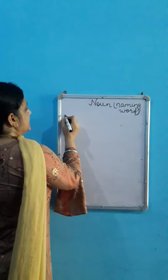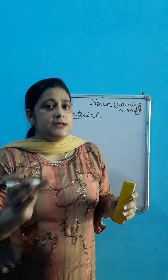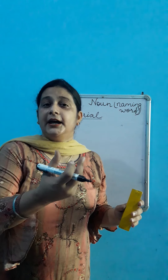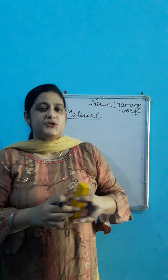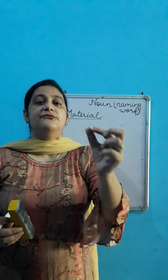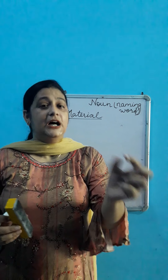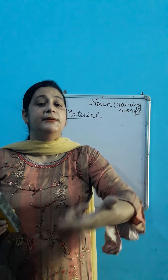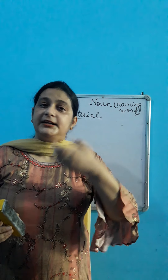Next comes material noun. A material noun is a name of a thing from which another thing is made. Matlab ek material ka naam, jis se koi cheez banti ho, us ko hum kya kehte hain? Material noun. Students aksar isme confused hote hain. Main aapko example deti hoon — jaise wood, rubber — yye kya hain? Hamari materials hain. Inse hum cheezein banate hain, toh yye kya hain? Material noun.